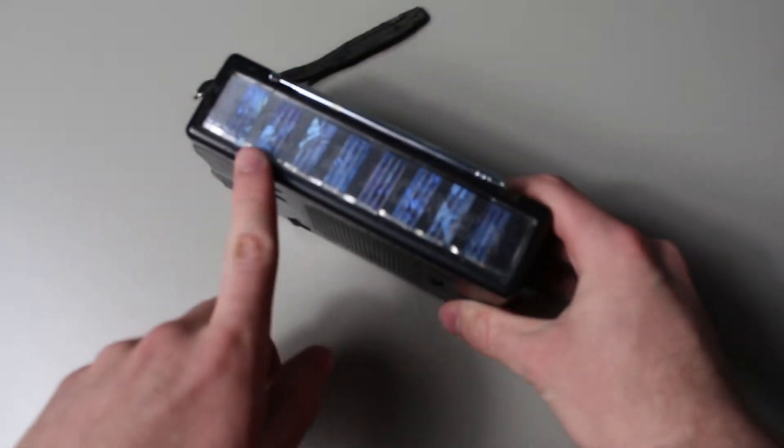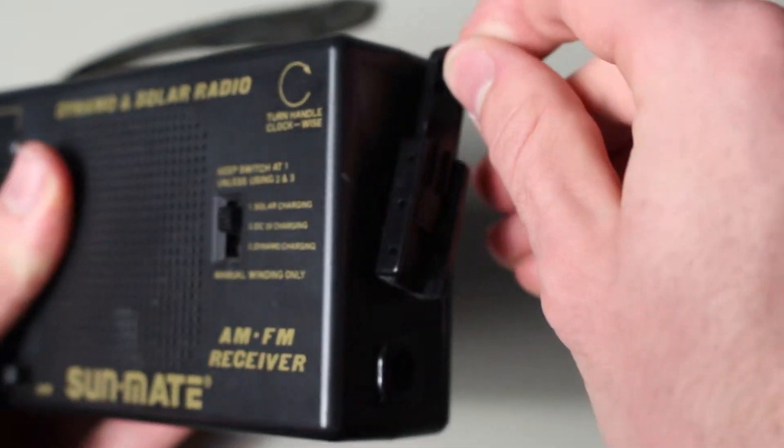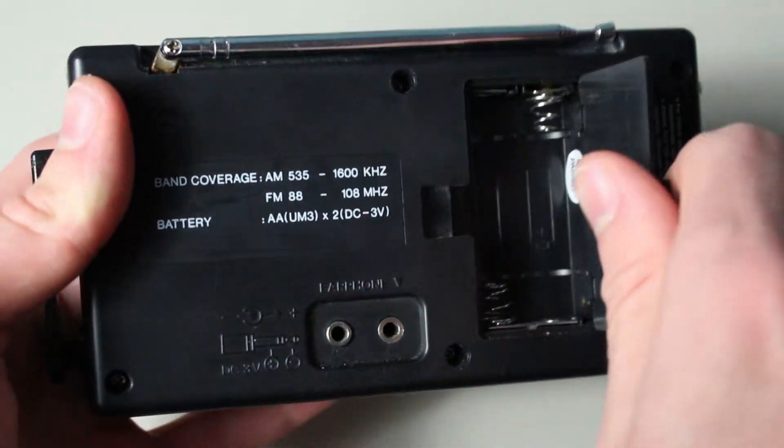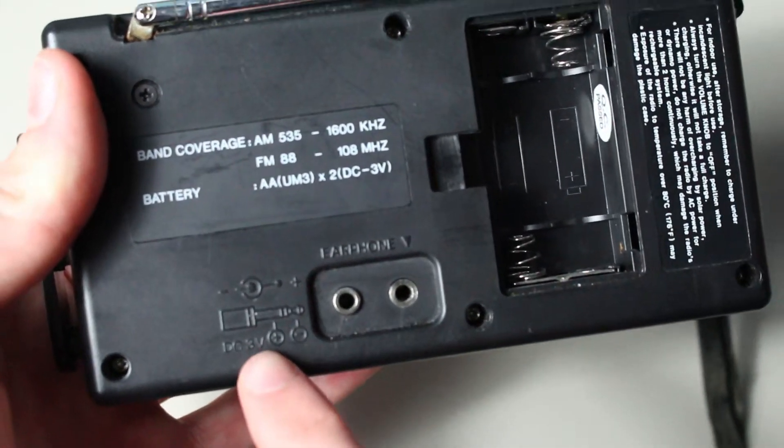First, you can leave it outside to charge using the solar panel when it is sunny outside. You can also crank the shaft, which is a dynamo generator. And finally, you can plug it into a 3 volt DC power source to get it to work.